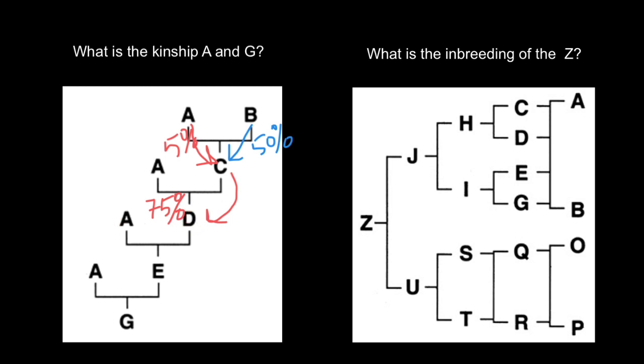And again, in the next generation, the kinship is going to increase. If here, the increase was by 25%, now it's going to be increased by 12.5%, so half the number of the previous number. So 25 is half of the 50%. So the kinship of the individual E and A is going to be 87.5%.